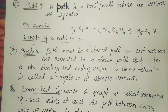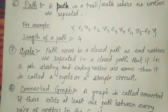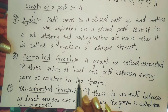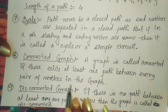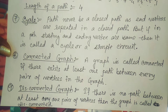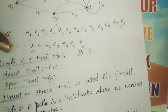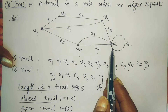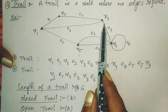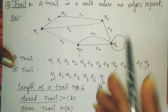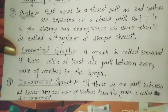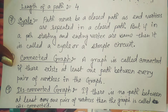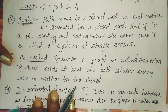A graph is called connected if there exists at least one path between every pair of vertices in the graph. So in a connected graph, for any two vertices you choose, there is always a connection or path between them. For a disconnected graph, if there is no path between at least one pair of vertices, the graph is called disconnected.